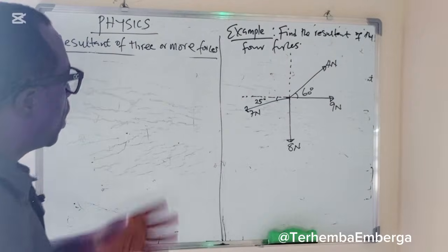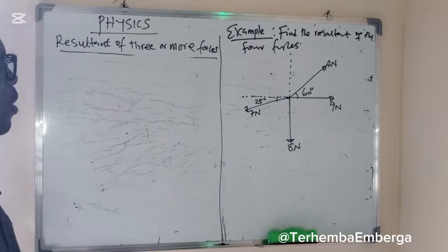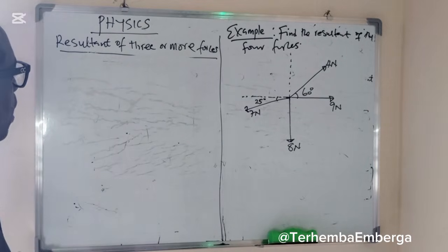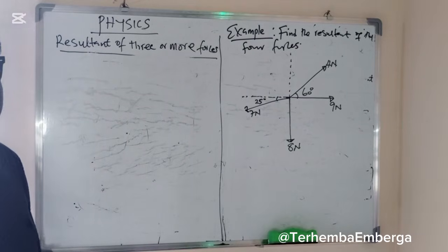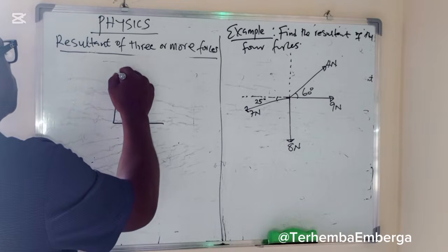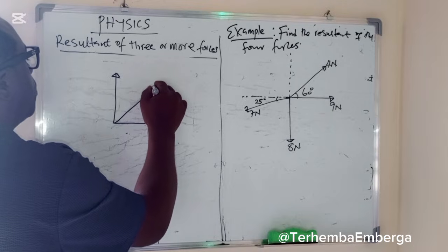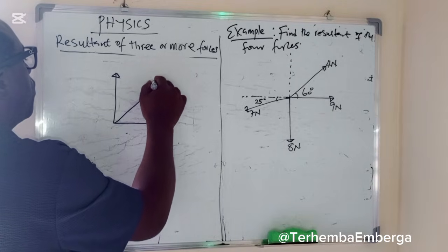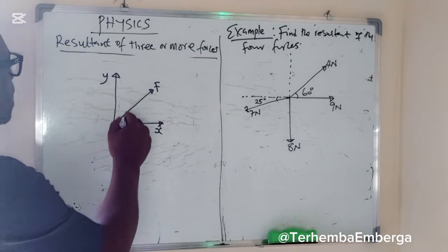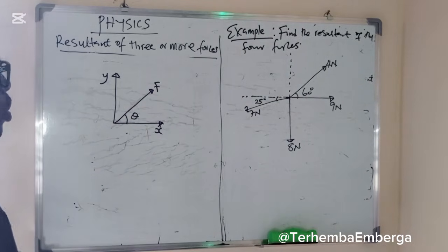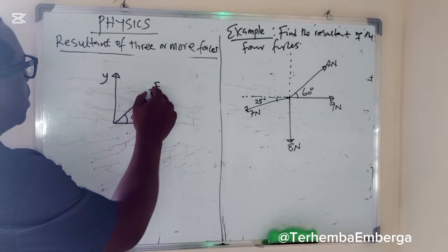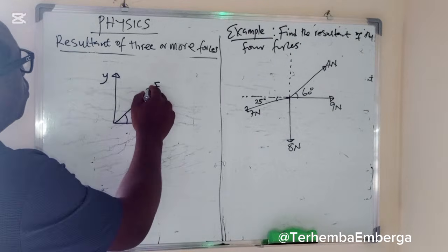Before we go into looking at the problem on how to resolve vectors, let's look at the background of how a vector can be resolved on the x-axis and the y-axis. For example, if I have a force here called F, this is my y-axis and this is my x-axis, and there's an angle here called theta. So I can resolve this on the x-axis and also on the y-axis.